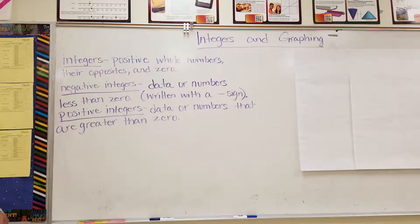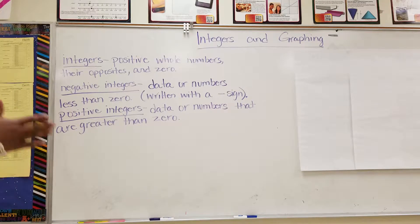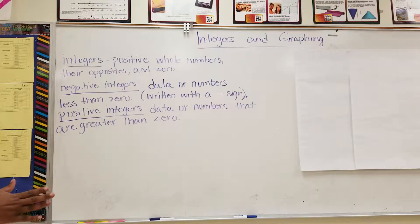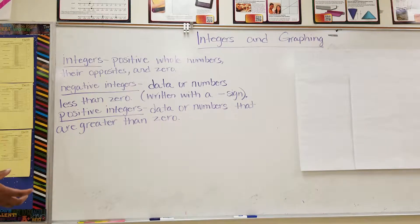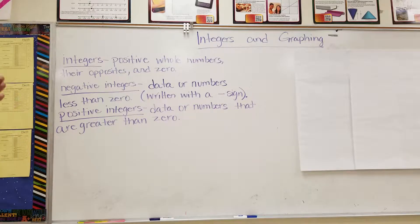So, positive whole numbers. Whole numbers are numbers such as 1, 2, 3, 4 — not halves, not three-fourths, but whole numbers: 1, 2, 3, 4, 5, and so on.